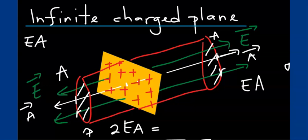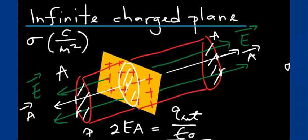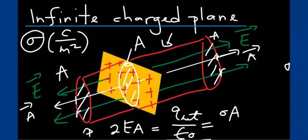This equals the amount of charge contained within that Gaussian surface over epsilon naught. Since this is a surface charge distribution, we introduce the surface charge density sigma, with units of coulombs per meter squared — analogous to the linear charge density introduced for the infinite line charge. It measures how much charge is concentrated within a given area A. Assuming the infinite charge plane is uniformly charged, sigma is a constant, and the net charge contained within the Gaussian surface is simply sigma times A over epsilon naught.